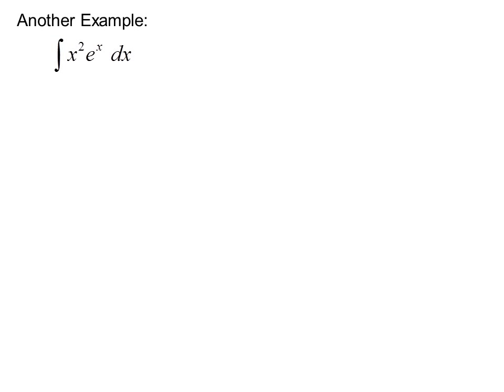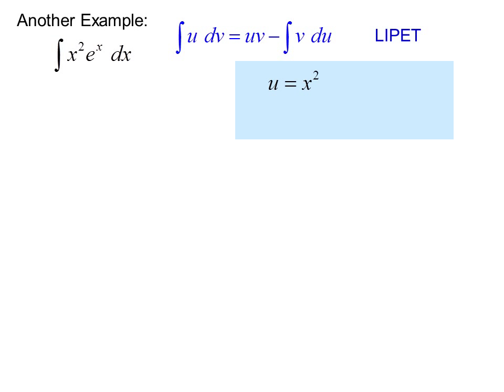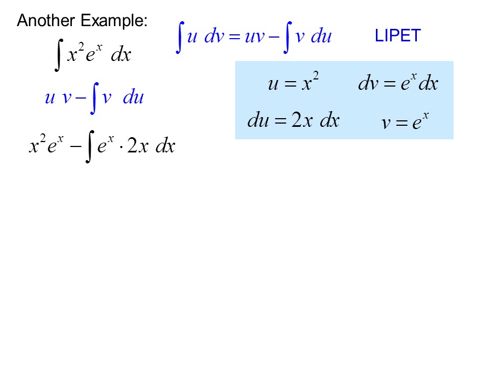Another example: the integral of x² eˣ dx. It's a product, so we try integration by parts. x² is a polynomial factor, so we let u equal x² because polynomial comes before exponential in LIPET. What's left, eˣ dx, becomes dv. So du equals 2x dx, and v equals eˣ. Using the formula uv minus the integral of v·du, we get x²eˣ minus the integral of eˣ times 2x dx.